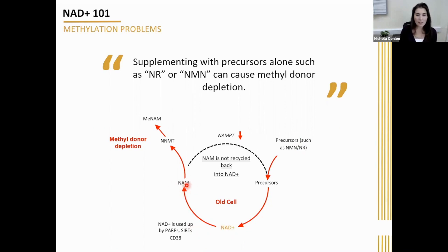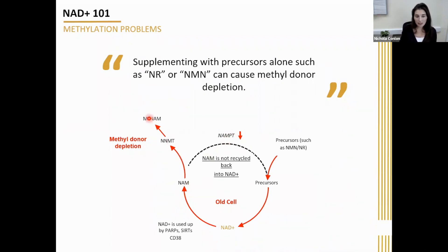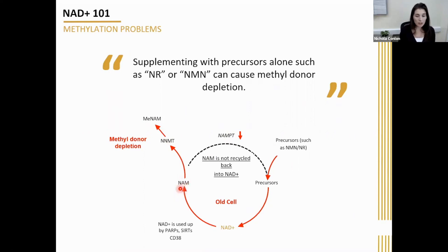If you haven't fixed the underlying problems in the cell causing NAD to decline — namely this reduction in the salvage pathway because of the NAMPT enzyme that's declined with age — what happens is the cell has to get rid of the excess nicotinamide. So it methylates it and excretes it. If you just continue pumping more NR or NMN into the system without trying to fix the salvage pathway, your cells keep using up the initial NAD boost, it gets converted into nicotinamide, and you get methyl donor depletion.